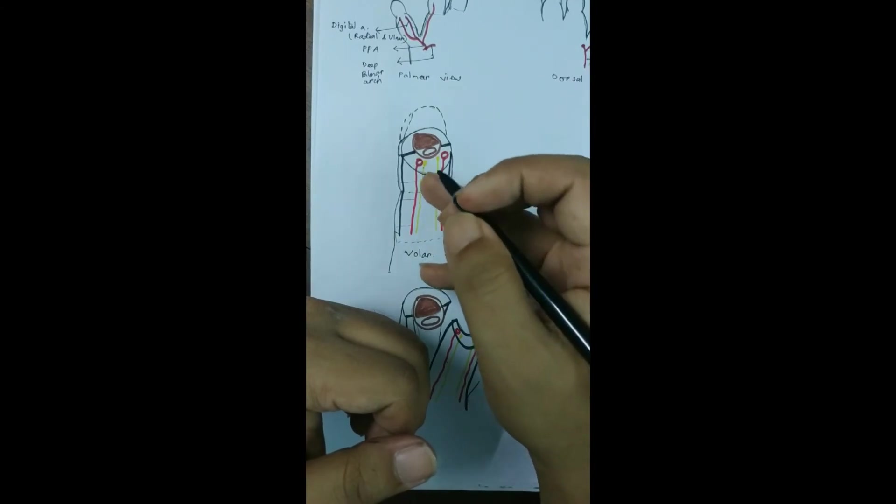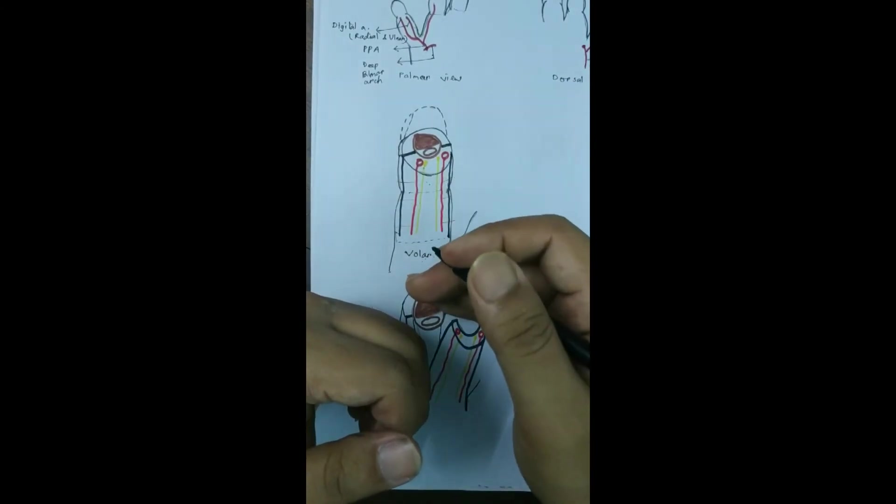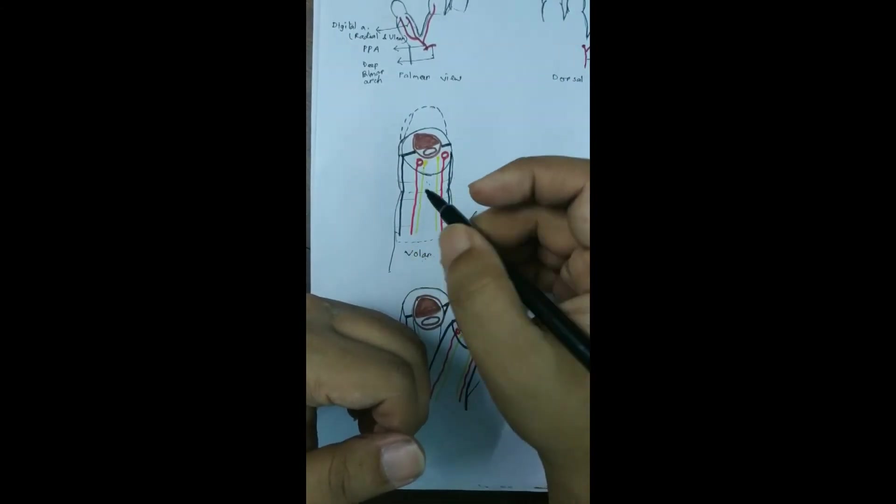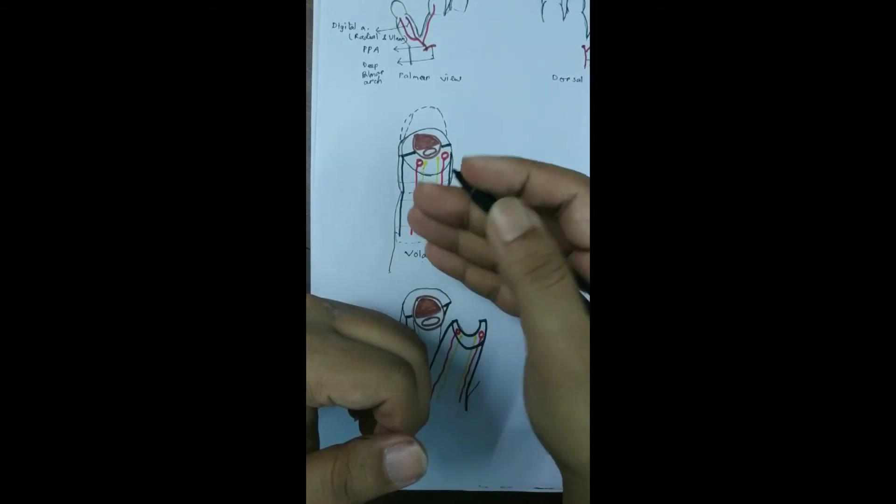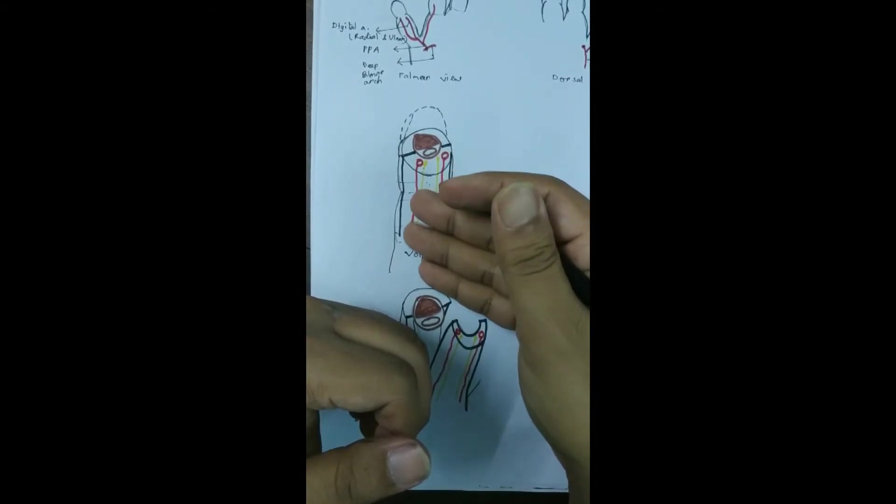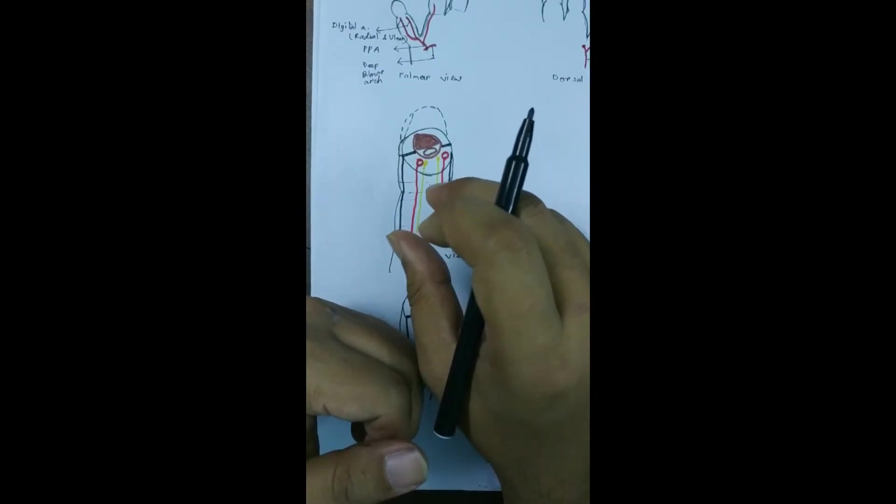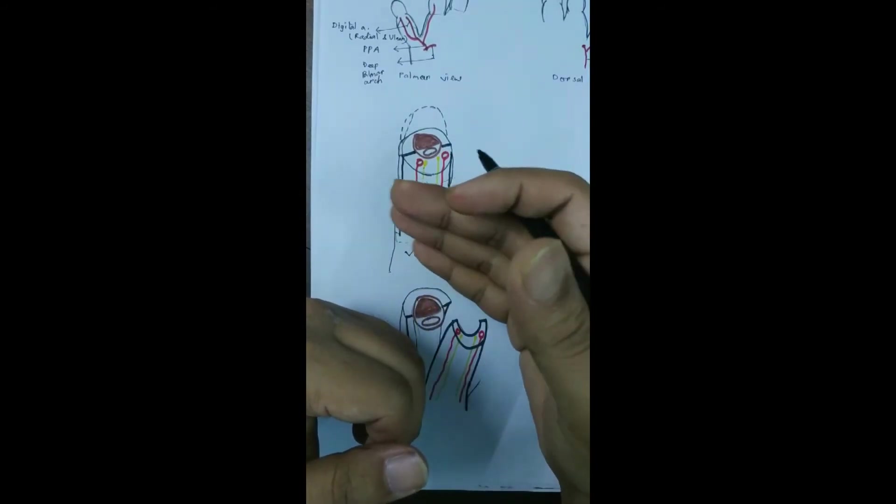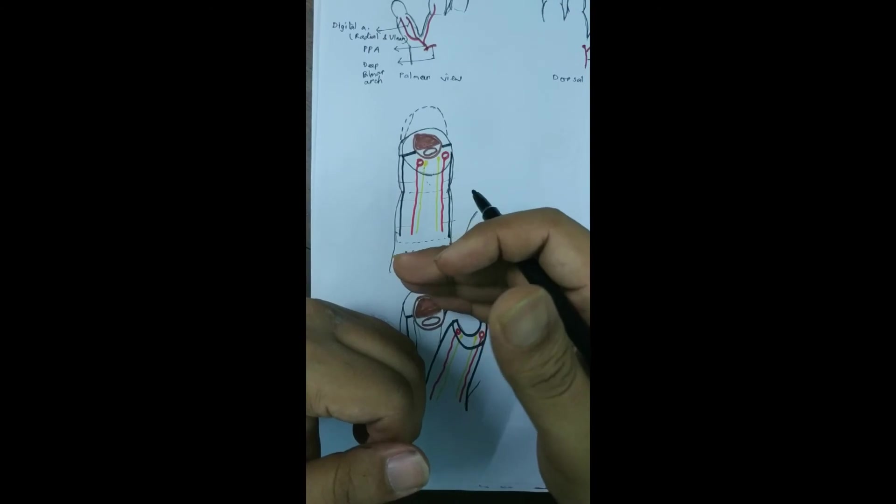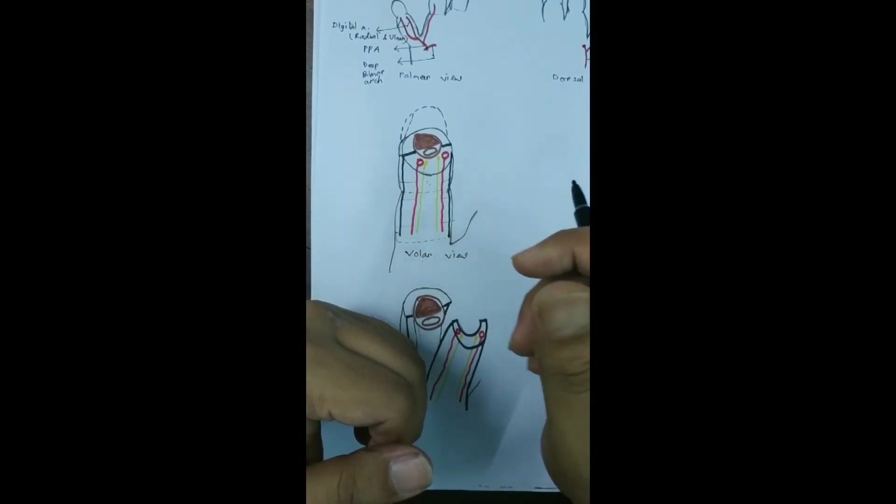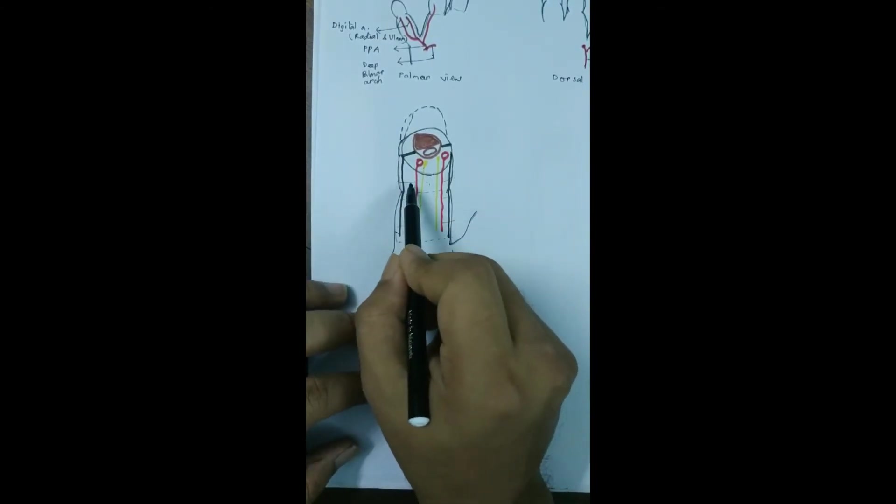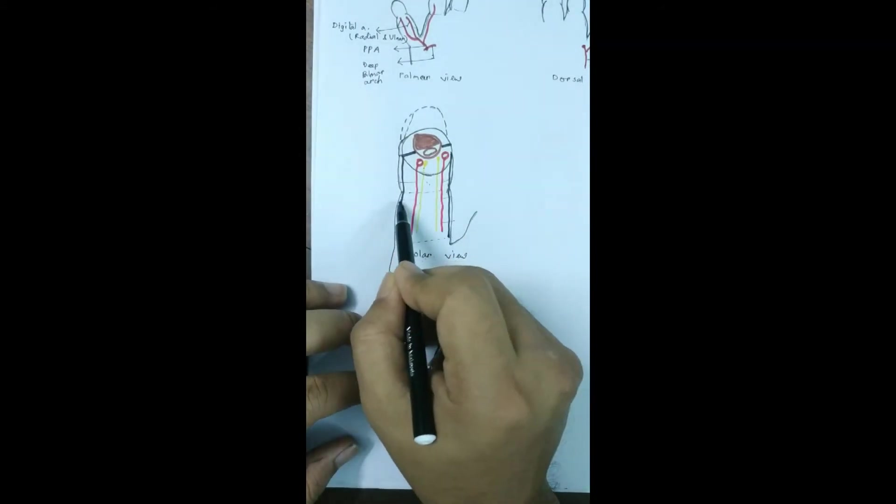We raise the skin and subcutaneous tissue off the periosteum. When we move proximally, then we dissect the skin and subcutaneous tissue off the tendon of the FPL. We leave the periosteum and flexor pollicis longus tendon.